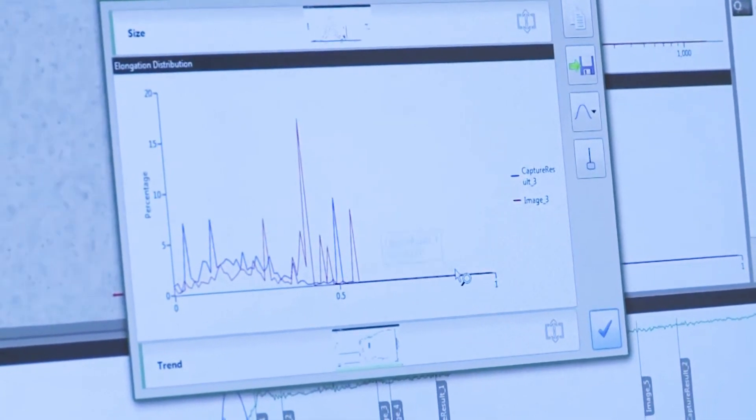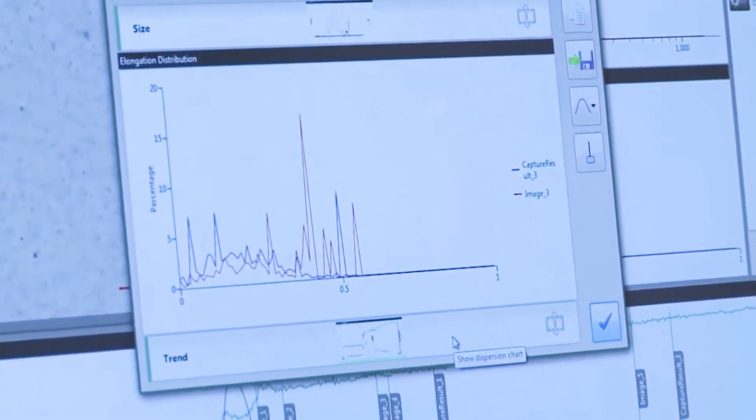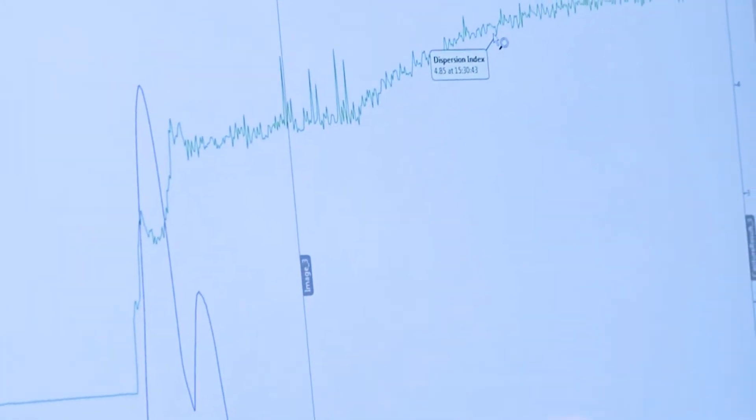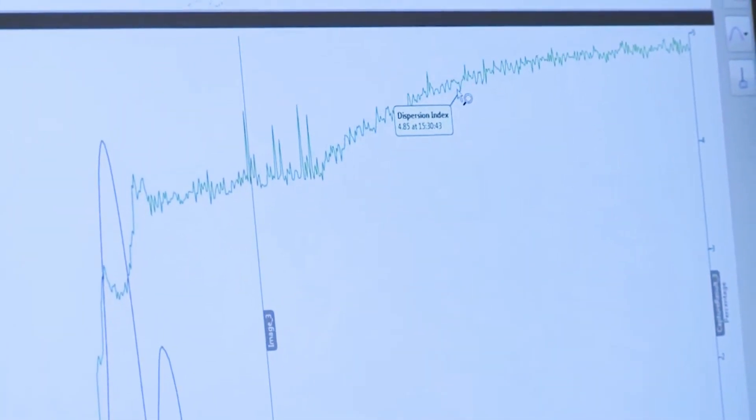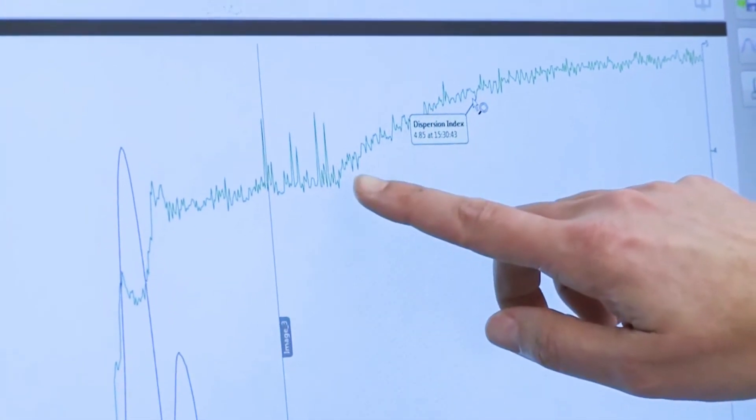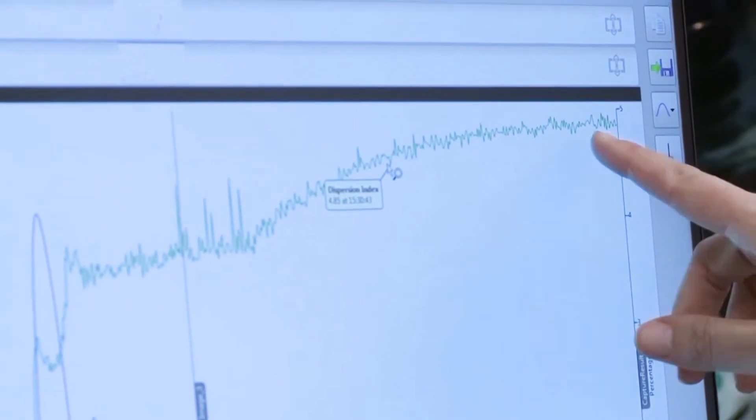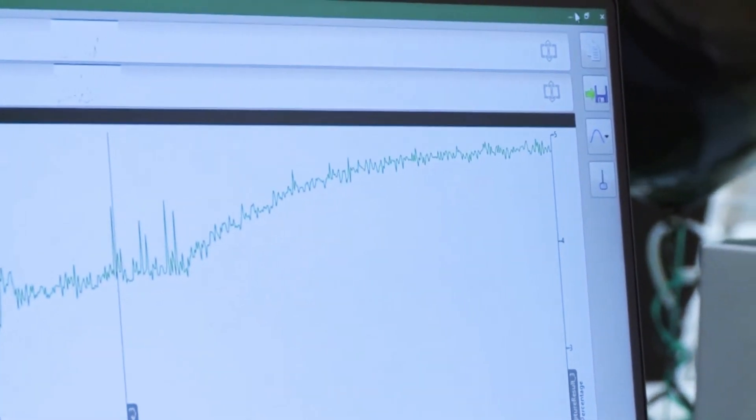We can also compare elongation to see if there's any change, and we can have a look at that dispersion index. So we can see when you put the sample in, there were quite a few changes there. And then as you turn on ultrasound, we can definitely see a steady increase in the dispersion index. Now it looks to me like that's starting to level out.